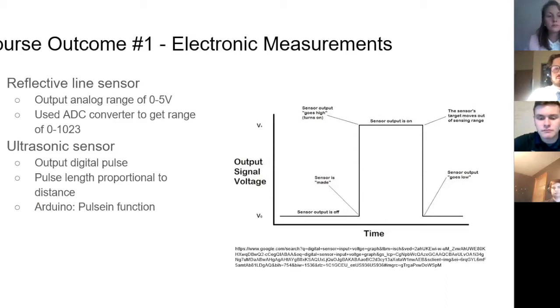For the ultrasonic sensor, those output a digital pulse, so just on or off, and it output a pulse length proportional to the distance from the object, and we were able to use the Arduino pulse-in function to measure the length of that pulse and know how far away from the object we were.